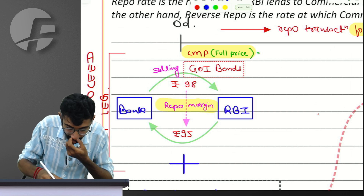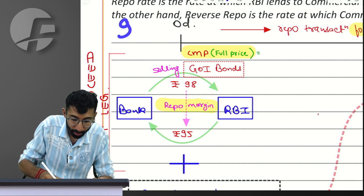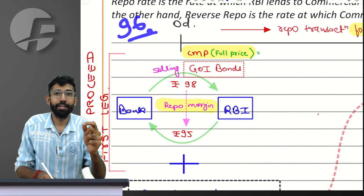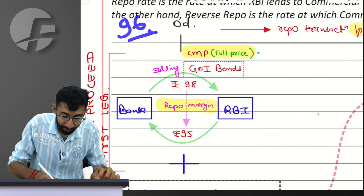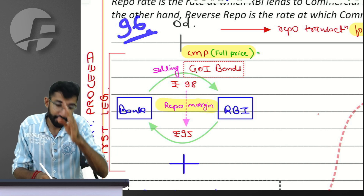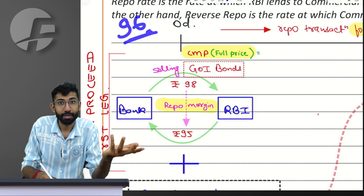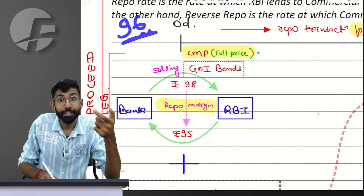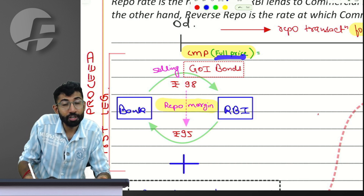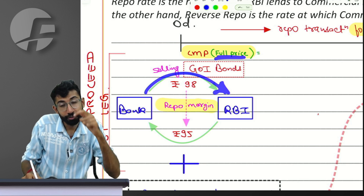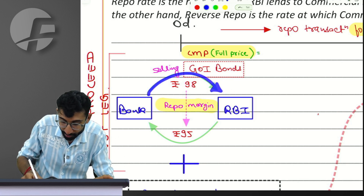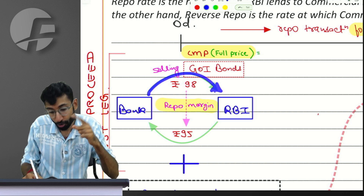Suppose the bond has a market price of Rs. 96. Trading at 96 means it is a clean price, because a bond always trades at clean price. If 96 is the clean price, I need to calculate the accrued interest and find out the full price. Why? Because when I sell the bond to someone, they are supposed to pay me the full price, not the clean price. So this transaction should happen at full price. First, I calculate the full price.